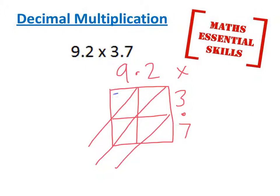9 times 3 is 27. 2 times 3 is 6. 2 times 7 is 14. 9 times 7 is 63.